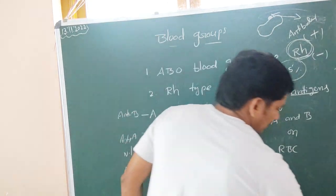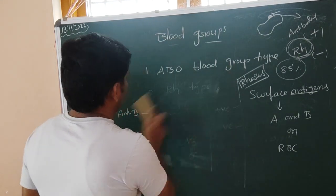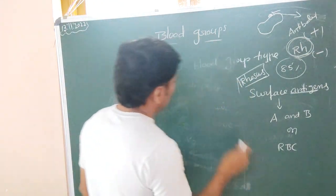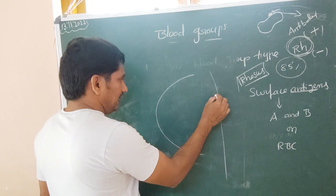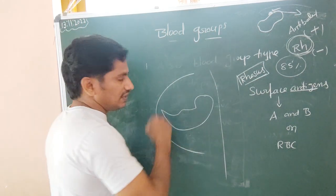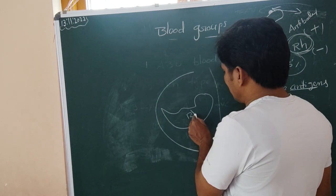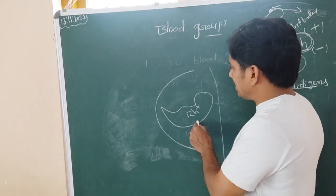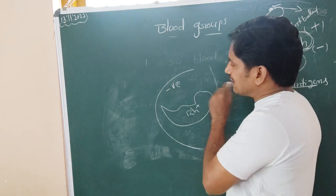This condition happens very rarely — when a pregnant mother who is RH negative has an RH positive fetus growing in her womb. The RH positive blood comes from the father through the fetus.